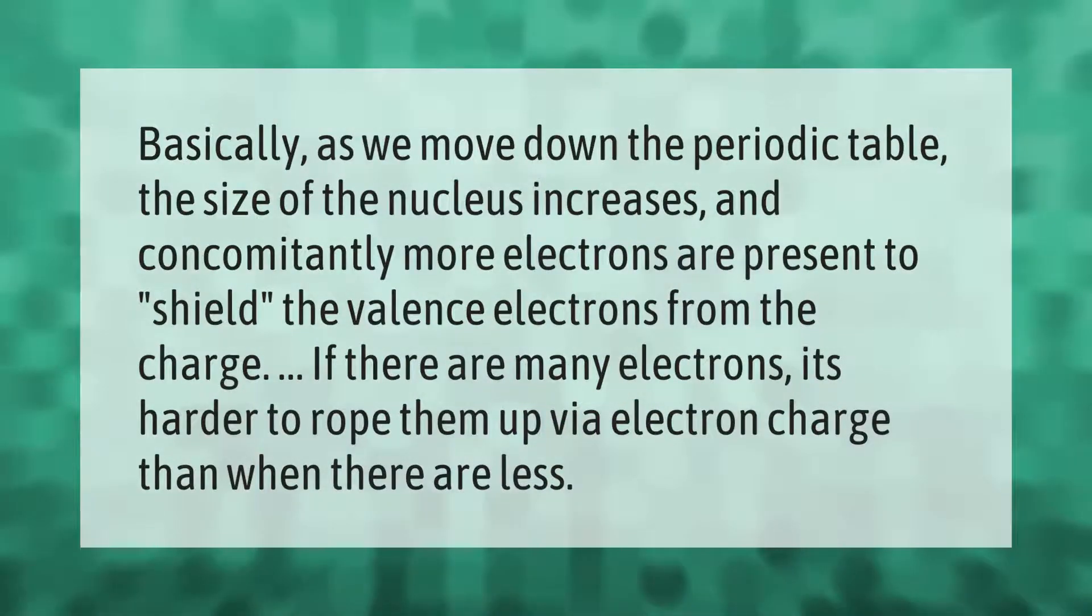Basically, as we move down the periodic table, the size of the nucleus increases, and concomitantly more electrons are present to shield the valence electrons from the charge. If there are many electrons, it's harder to rope them up via electron charge than when there are less.